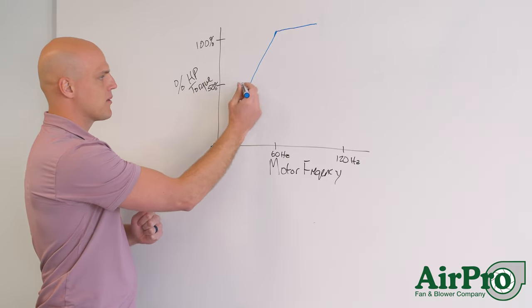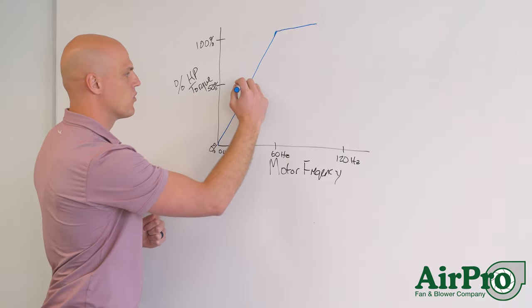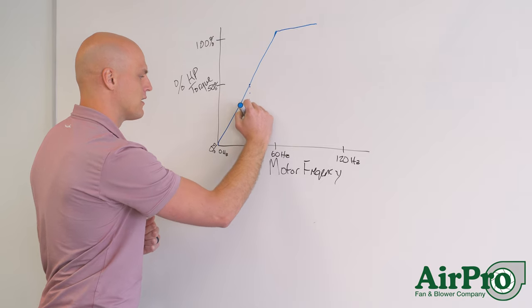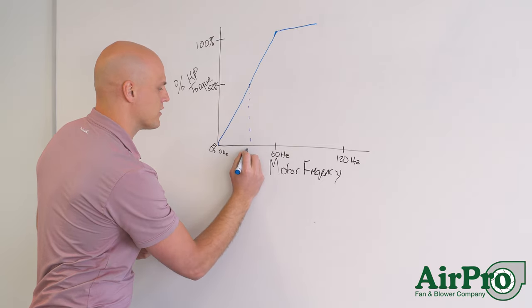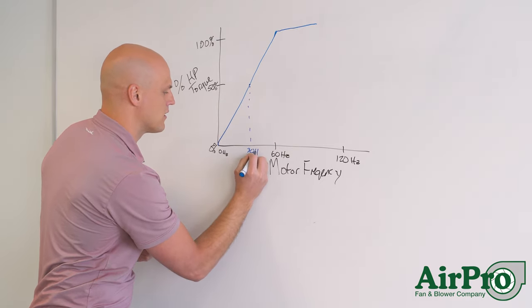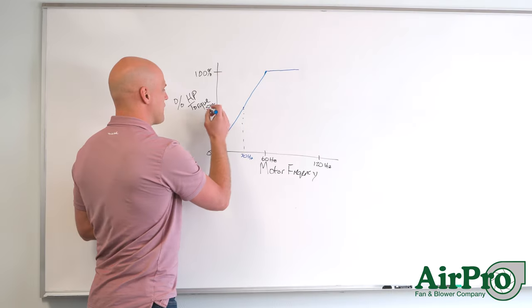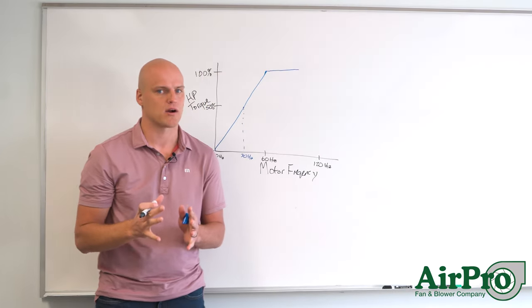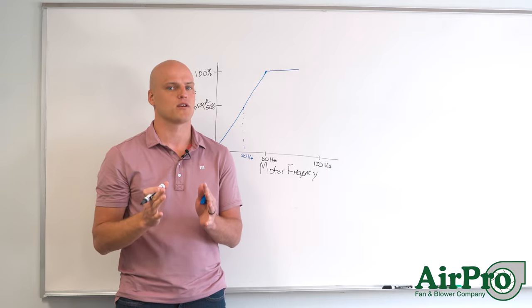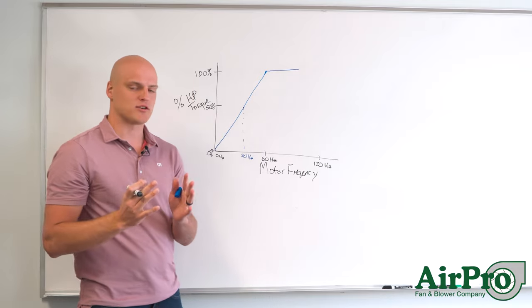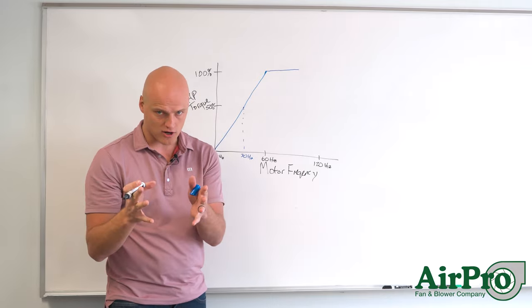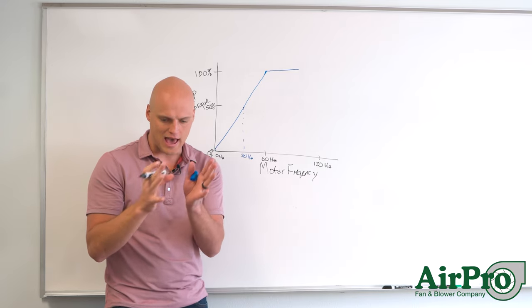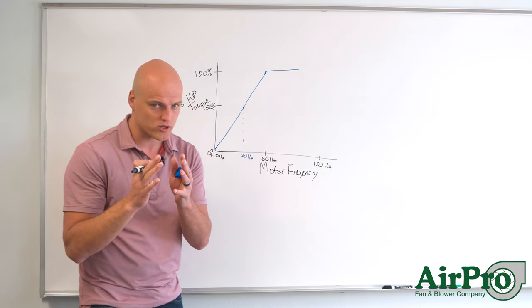So at this 50 percent mark right here we're running at 30 hertz. And we have 50 percent of the motor horsepower available. This is really important to understand. Because if you're taking an 1800 rpm motor and at 1800 rpm you have 100 horsepower available.